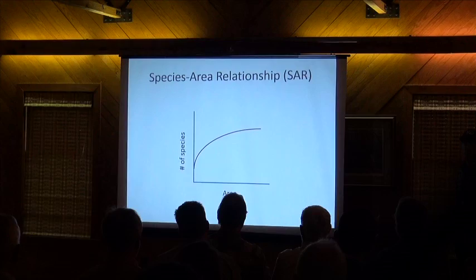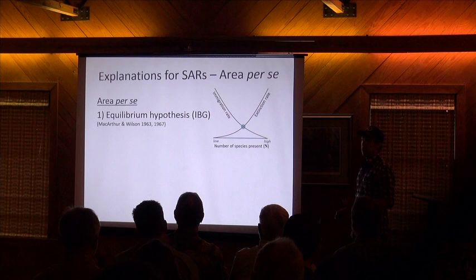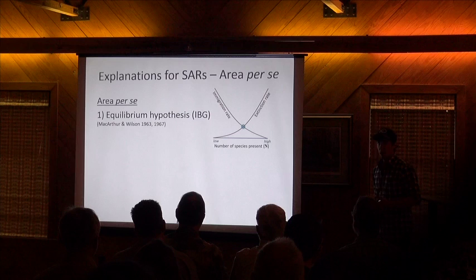The species-area relationship is probably one of the most widely spread patterns in ecology and generally describes the increase in the number of species with the area sampled. There have been a number of mechanistic explanations proposed for this pattern.